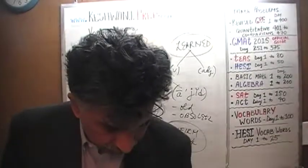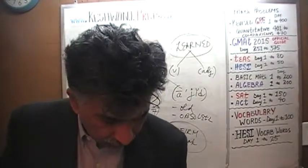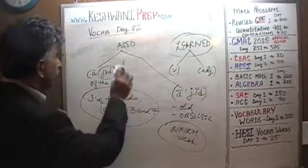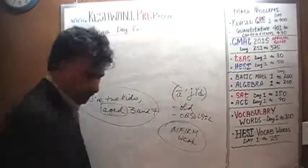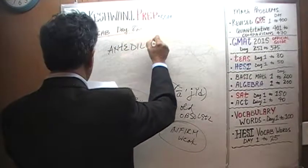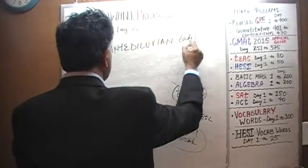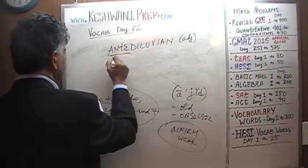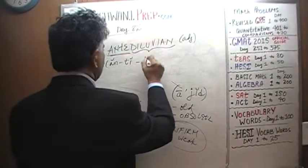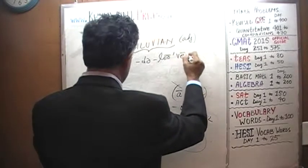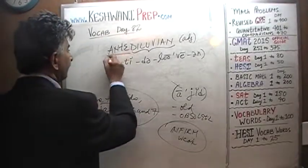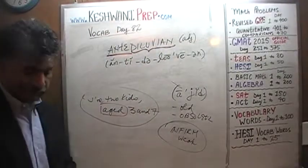The next word we are going to learn is also about being old. It's an adjective with the prefix 'ante' and the suffix 'diluvian' — giving us 'antediluvian.' What does it mean? Literally, 'diluvian' means flood and 'ante' means before. So literally it means 'before the flood.' It has a literal meaning and can also be used metaphorically — and most often it is used in the metaphorical sense.